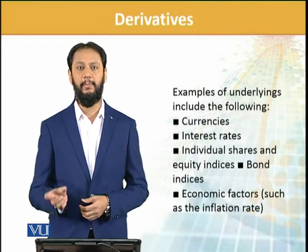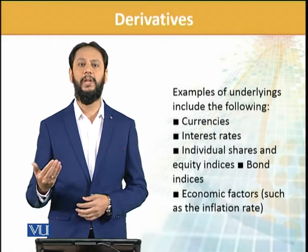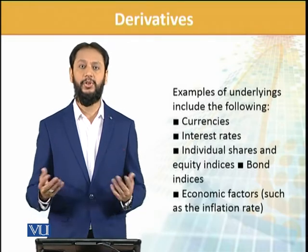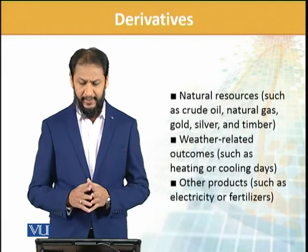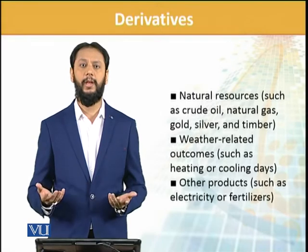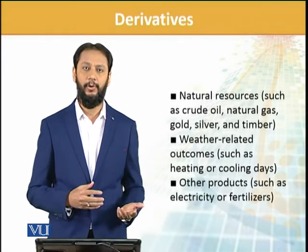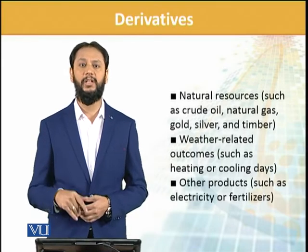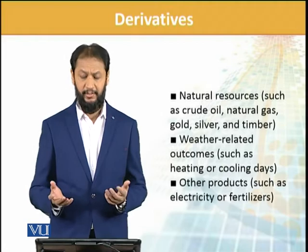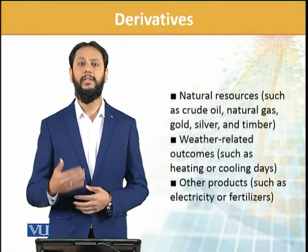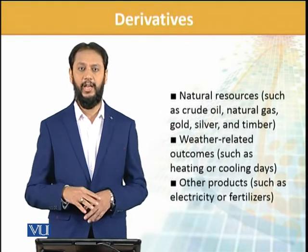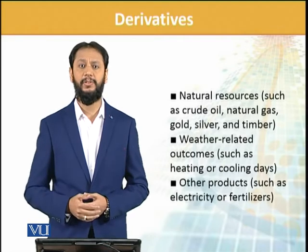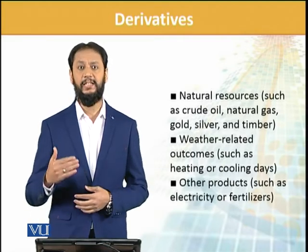The exchange is now called PSX, but the index name is still KSE-100. So I could invest through some derivative linked to that index. Similarly, derivatives can be on economic factors such as inflation. Natural resources are very commonly used as underlyings — such as crude oil and natural gas, because of their main utility, and there is significant reliance and existence of derivatives on them. Weather-related derivatives also exist — such as heating and cooling days — though these are more common in developed markets and don't exist in our market. But as we are learning the whole spectrum, we should have an idea. Other products such as electricity and fertilizers can also be underlyings. So it's a long list — the underlying can be almost anything.